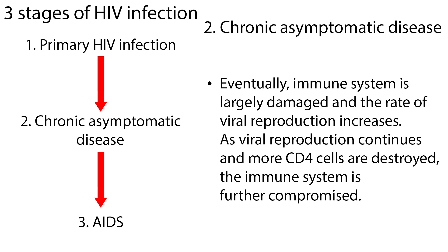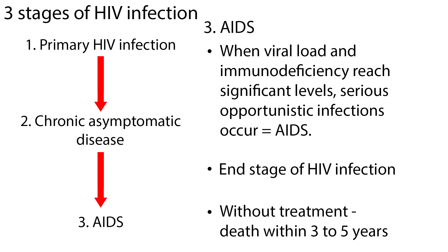Eventually, the immune system is largely damaged and the rate of viral reproduction increases. As viral reproduction continues and more CD4 cells are destroyed, the immune system is further compromised. When the viral load and immunodeficiency reach significant levels, serious opportunistic infections occur and the illness is termed AIDS.